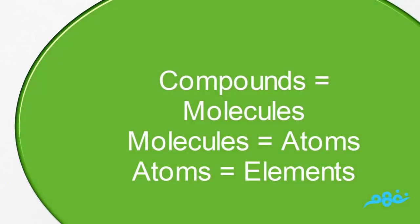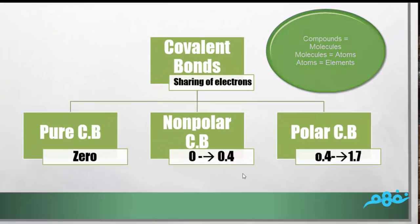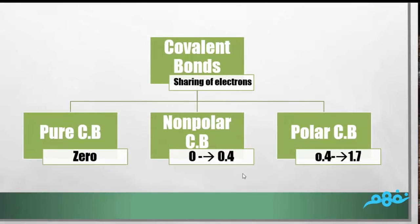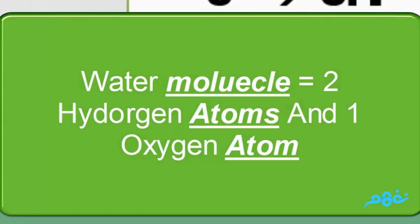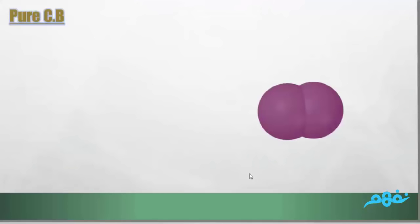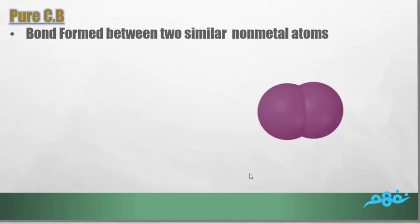The three types of bonds are formed from molecules, and molecules are formed from atoms. For example, the water molecule is formed from two hydrogen atoms and one oxygen atom. So molecules are formed from atoms.